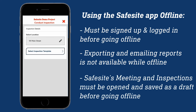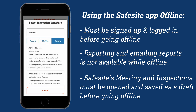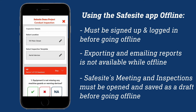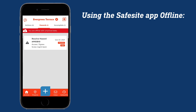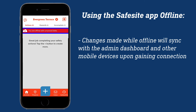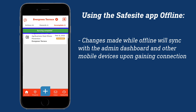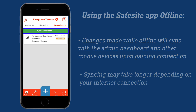SafeSite's library of meeting and inspection templates, which have not been accessed or used before, will not be accessible if offline. So it is recommended to open the inspections or meetings and save them as a draft before going offline. Any changes made while you are offline will not appear on the admin dashboard or other mobile devices until you are back online. Upon regaining internet connection, you should see the offline banner changing to a syncing banner, and eventually a sync complete banner will appear. Keep in mind that syncing might take longer depending on your internet connection.